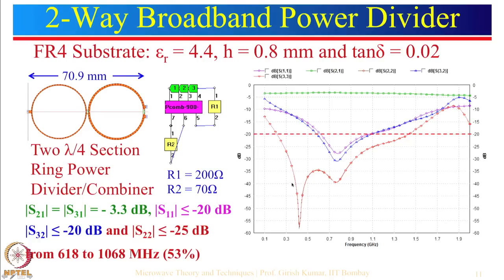Now let us look at another design: a two-way broadband power divider. We use the same FR4 substrate, but now instead of one lambda/4 section we use two lambda/4 sections of a ring power divider — and I call it a combiner as well because of the isolation resistances added.